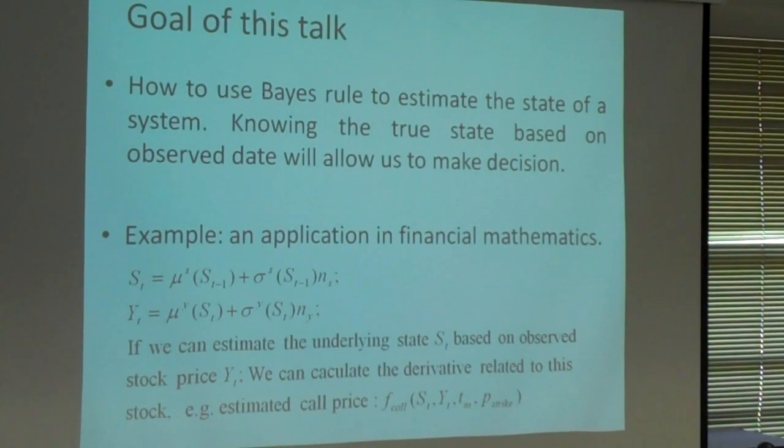And the underlying state is different related to different problems. So here, we didn't consider the specific meaning of each symbol here. I just want to show you there's an underlying state and there are some observations. We want to estimate the underlying state based on this observation. And if we know this, if we can estimate this underlying state, then we can find the estimated call option price. And then we can compare it with the option price in the market. Then we can make some decision based on this information.